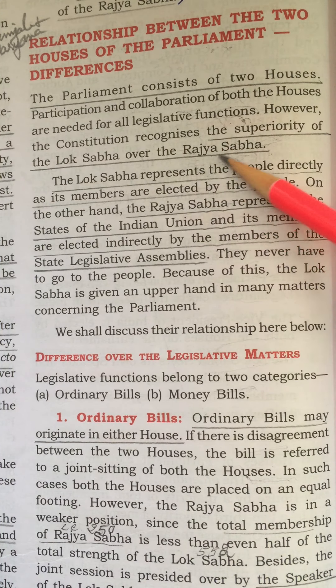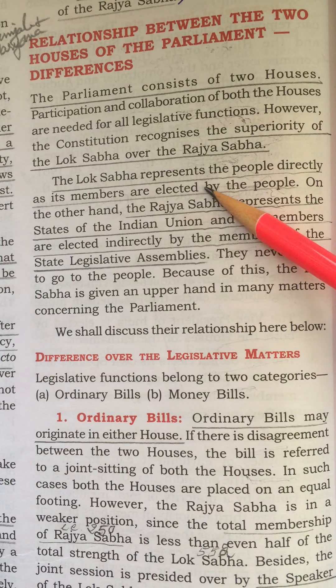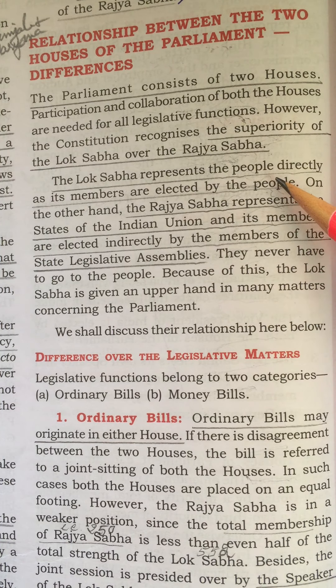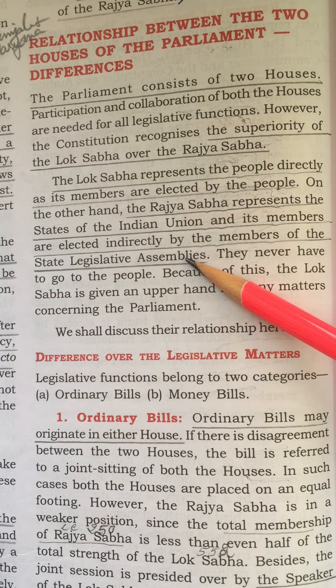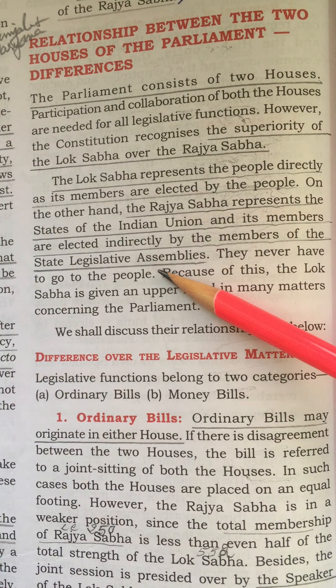In certain matters, Lok Sabha has got more powers than the Rajya Sabha. Lok Sabha represents the people directly, as its members are elected by the people. On the other hand, Rajya Sabha represents the states of the Indian Union, and its members are elected indirectly by the members of the State Legislative Assembly. Because of this, Lok Sabha enjoys more power in many matters concerning the Parliament.